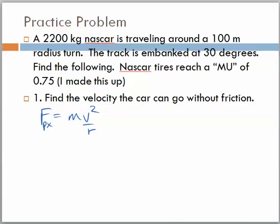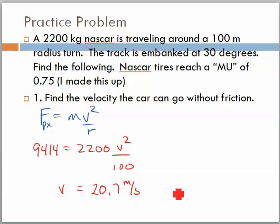So, I'm going to say, 9414 is equal to the mass of 2200 kilograms times the velocity squared, all over the radius of 100 meters. And our velocity, in this case, then, when I do some simple math, turns out to be 20.7 meters per second, or roughly about 42 miles per hour. With absolutely no friction, just because it's embanked at 30 some degrees.